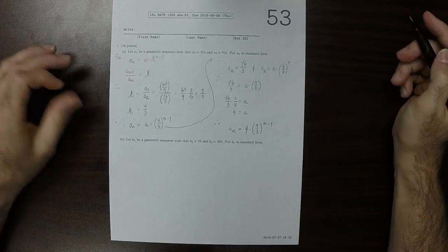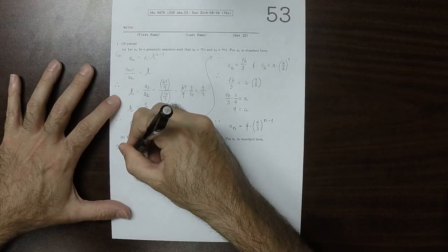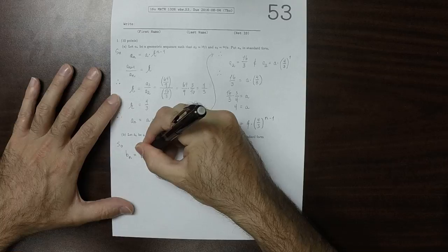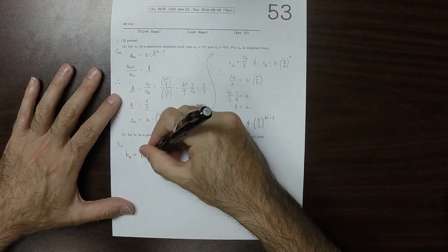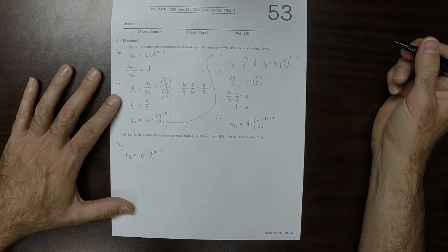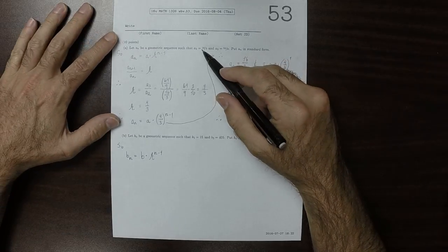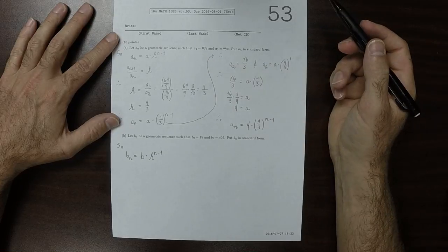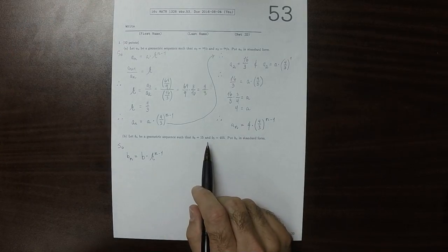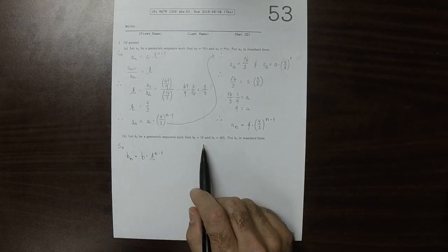Part b, what we know is that b_n, because it's a geometric sequence, is some fixed b multiplied by r to n minus 1. Now, in part a, we were given two consecutive terms in the sequence. And part b, we have b2 and b5. Those are not consecutive. So this exercise is slightly more involved than part a.